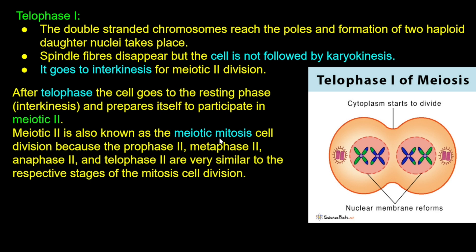Meiotic second is called meiotic mitosis cell division because prophase second, metaphase second, anaphase second, and telophase second are similar to the respective stages of mitosis cell division.